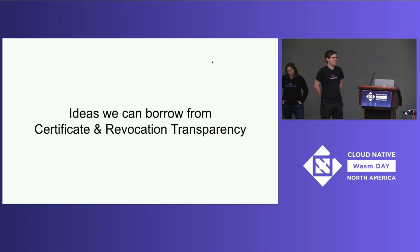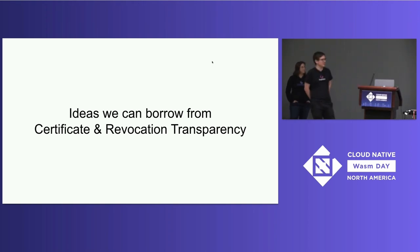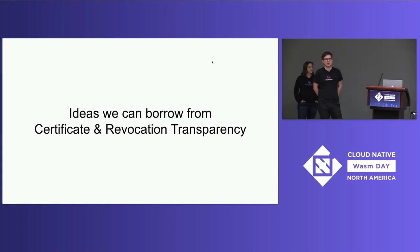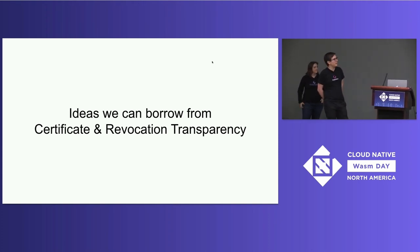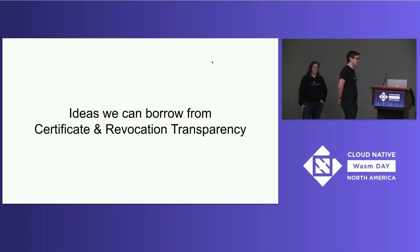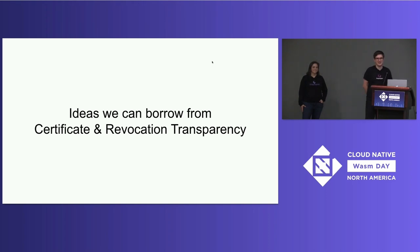So we just talked about component orientation — working with the component model and how that lets us build building blocks — and a little bit about federation and the way these can interoperate between different registry instances. I'm going to talk a little bit about some ideas that we can steal from certificate and replication transparency and what that lets us do.